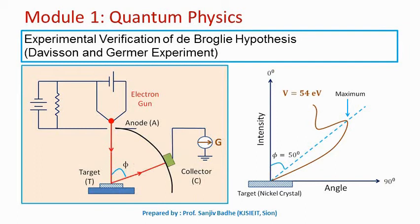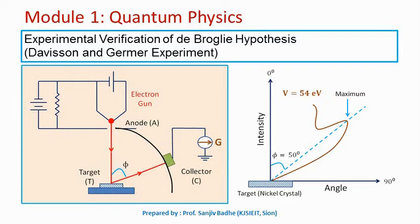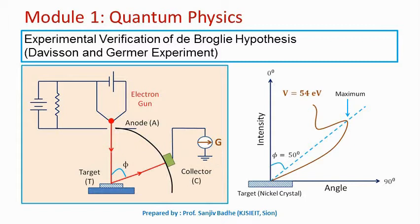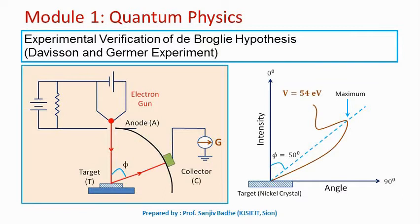The first part of the statement — that a wave is associated with every moving particle — was justified using Bohr's postulate, which confirmed the existence of waves associated with electrons revolving in circular orbits inside the atom. However, this justification cannot be accepted as firm evidence because Bohr's postulate is itself an assumption.